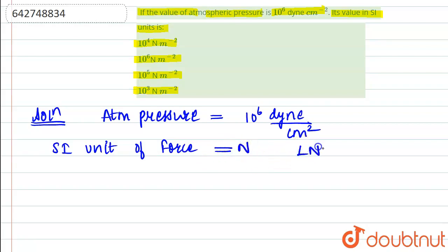And we also know the relation that 1 N is equal to 10 to the power 5 dyne. So, 1 dyne is equal to 1 into 10 to the power minus 5 N.